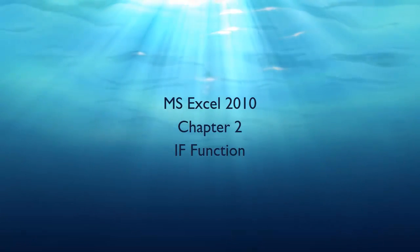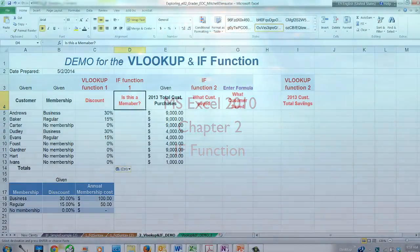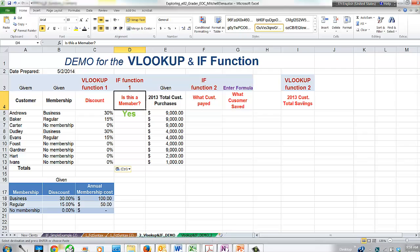The next task to be performed is in the Is this a member column. We want to display the text Yes if the customer is a member and the text No if the customer is not a member. We will use the IF function and extract this information from the membership table.